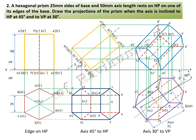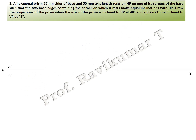This completes the edge condition problems for the hexagonal prism. Next is the corner condition problem. Read the problem carefully: 25 mm sides of base, 50 mm axis length, rests on HP on one of its corners — such that two base edges containing that corner make equal inclination with HP. Draw the projection when the axis is inclined to HP at 40 degrees and appears to be inclined to VP at 45 degrees. 'Appears to be' means without locus.